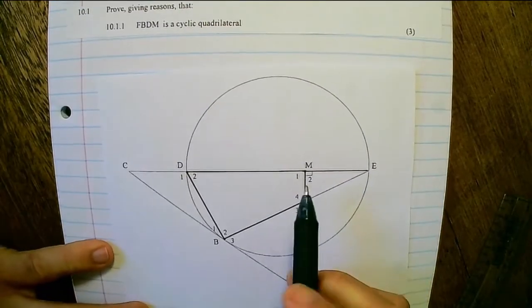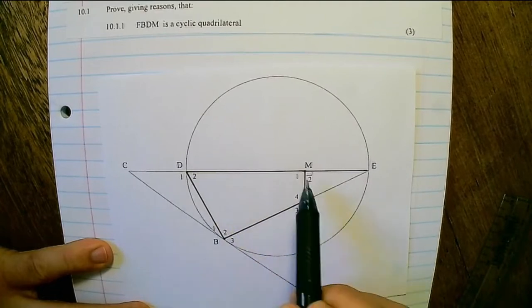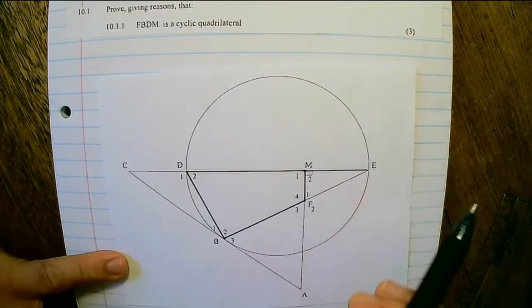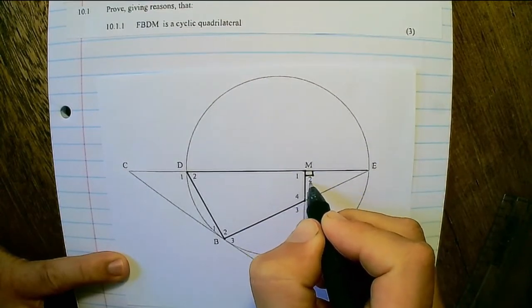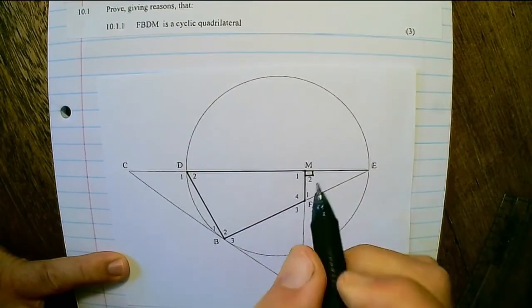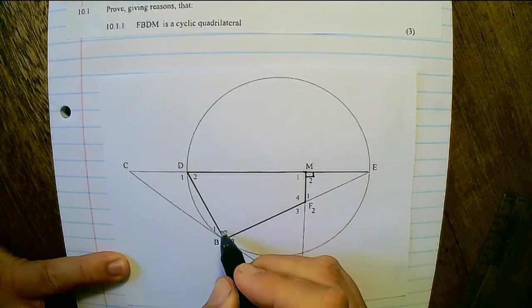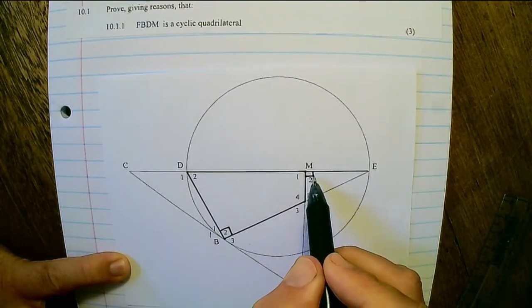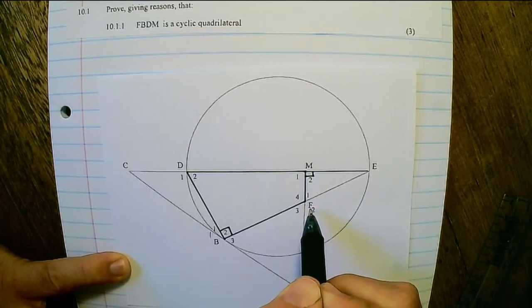It does help in the exam to darken the lines of the figure or to highlight it with a different color. And then we can easily see that M2 is an exterior angle of the cyclic quad and that DE is the diameter. Therefore B2 would be equal to 90 degrees, angles in the semicircle. And then we have proven that M2 is equal to B2, and therefore FBDM